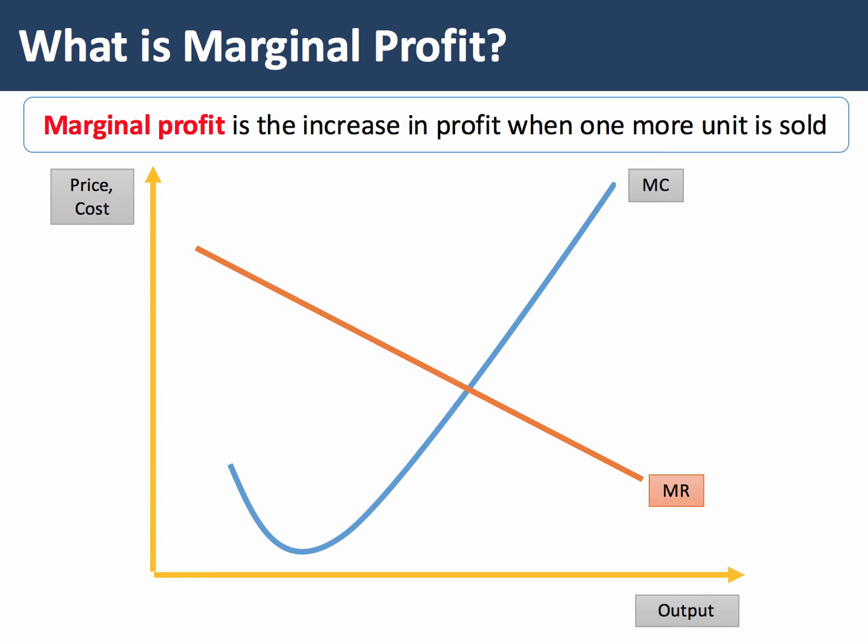In our diagram here, we draw marginal revenue as downward sloping. Marginal cost is upward sloping because of diminishing returns. Let's take an output level Q1. At Q1, the marginal revenue is greater than the marginal cost.